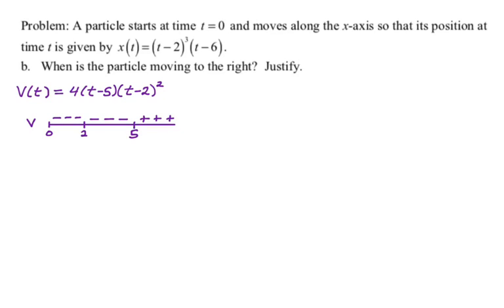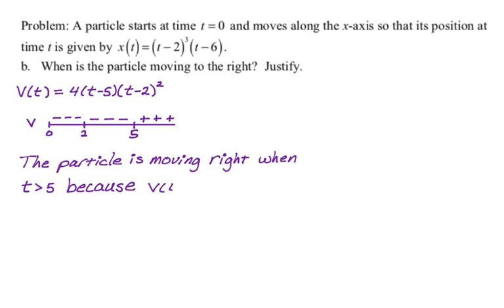Okay, so this is not good enough. Now we're going to write our answer. So the particle is moving to the right when t is greater than 5, because v(t) is greater than zero on that interval. So we state the answer and then we justify it.